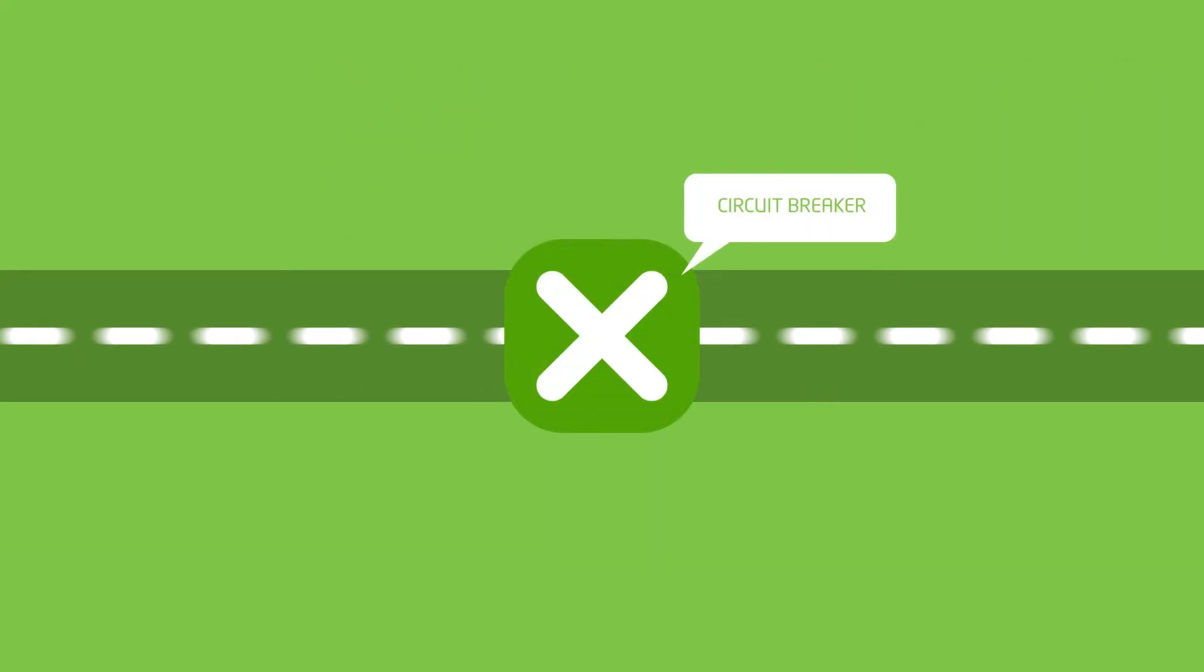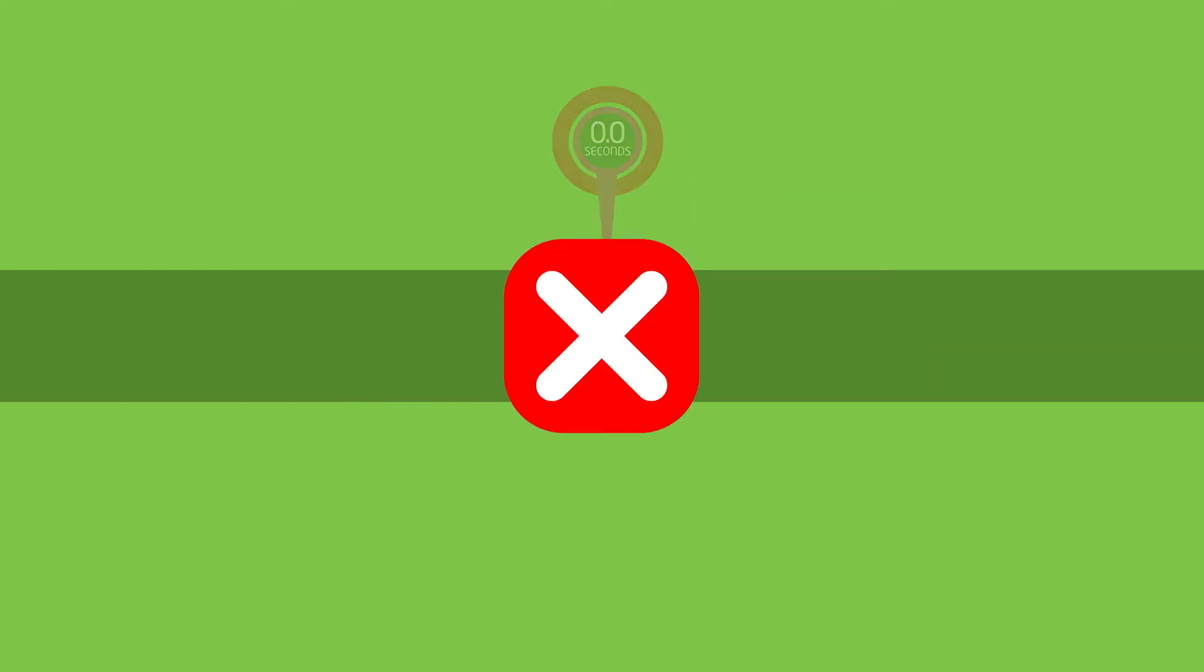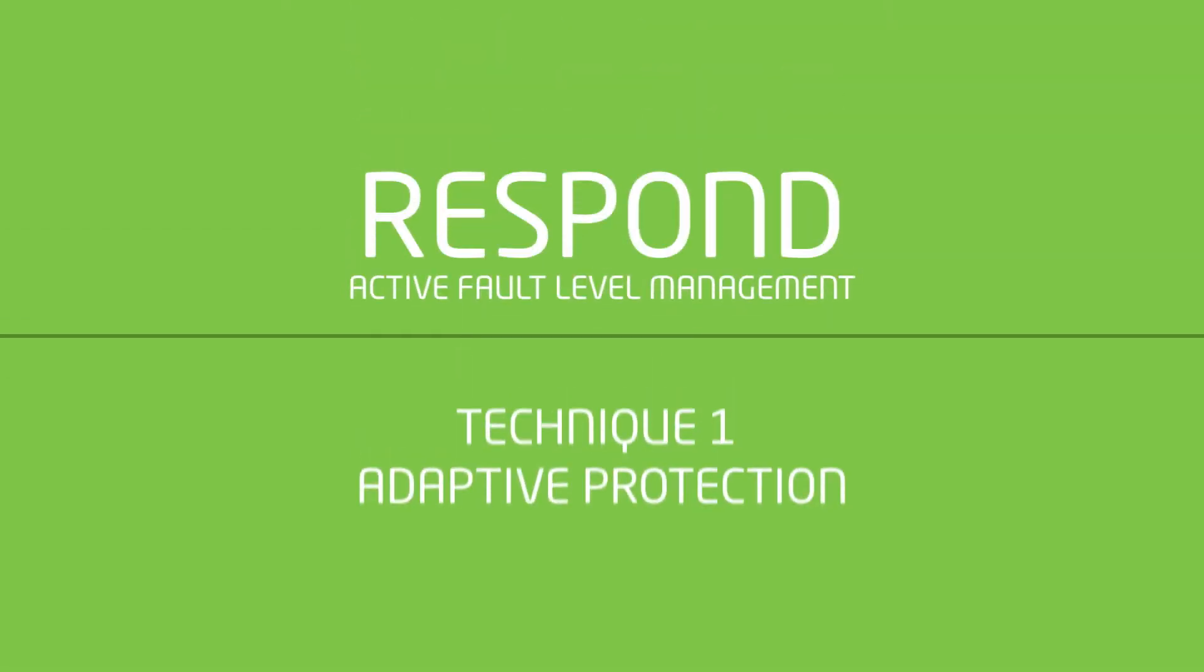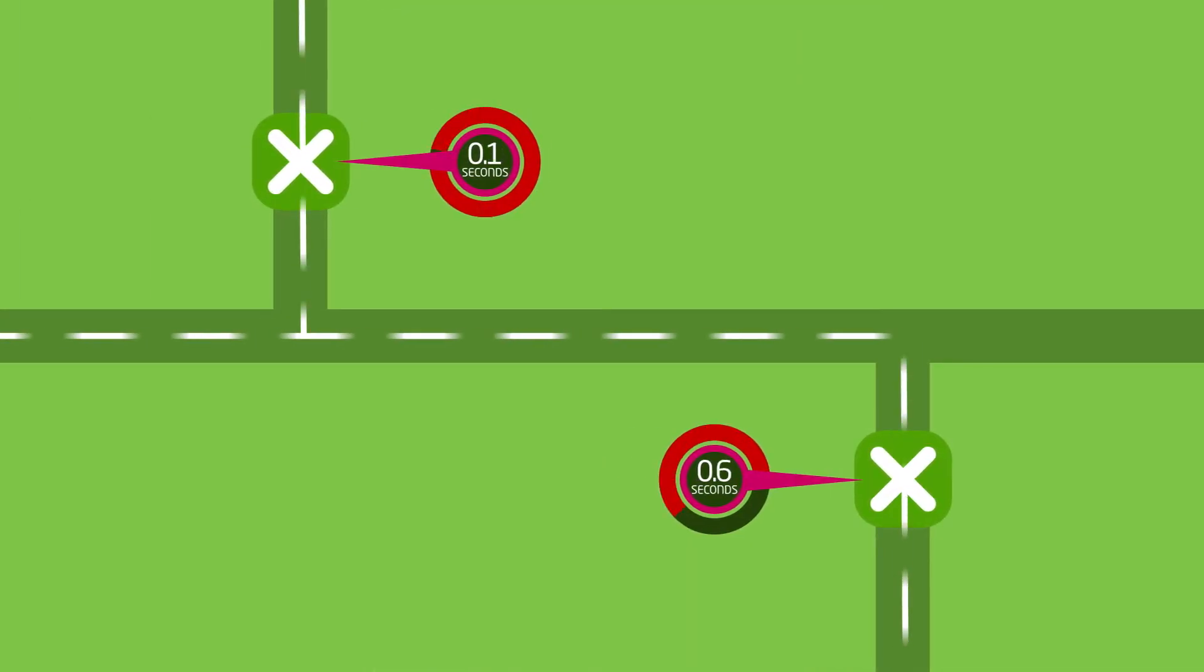Circuit breakers in a substation are set to trip at specific times to stop the fault current flowing. Our first innovative technique, adaptive protection, is about how we sequence the tripping of circuit breakers.